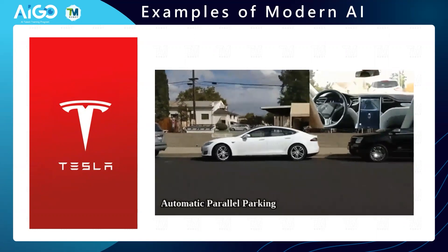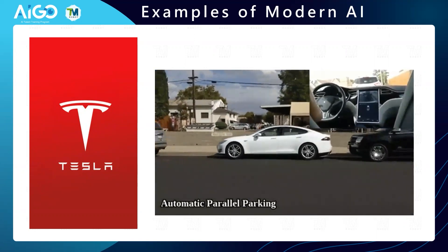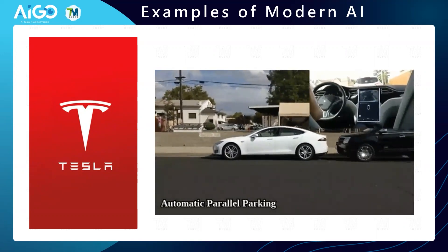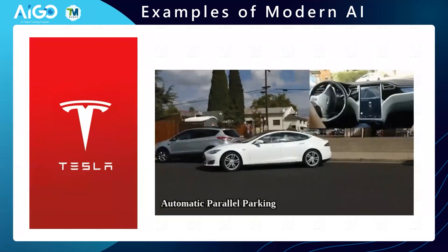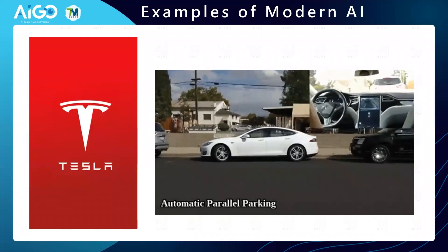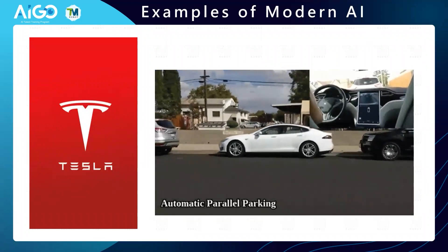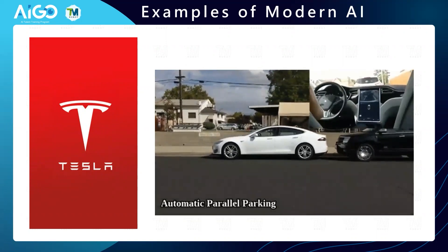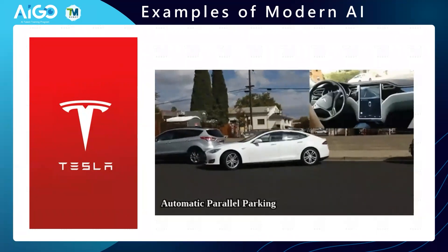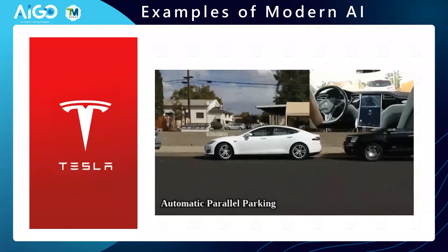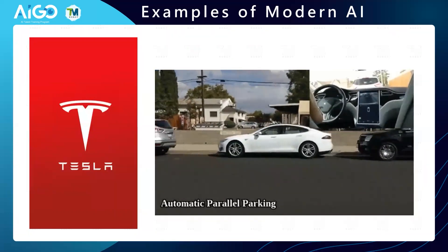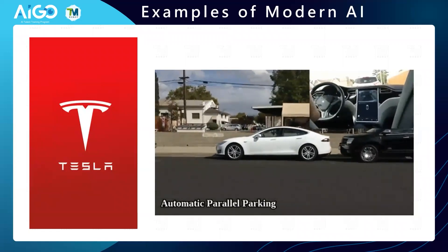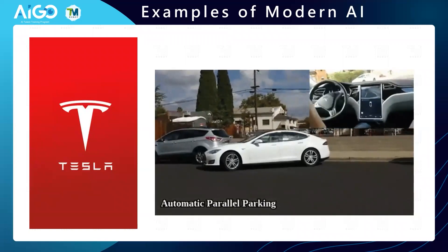What you might not know is that the Tesla car itself has eight surrounding cameras and shockingly 12 ultrasonic sensors around it. Similar to the Google driverless car, these automotive driverless programs use cameras, radars, and sensors around the car to assist the car itself. This allows the car to see up to 250 meters of range. If you think about it, seeing 250 meters clearly with your own eyes is difficult, but with powerful cameras and sensors, the car sees further and better than you do.